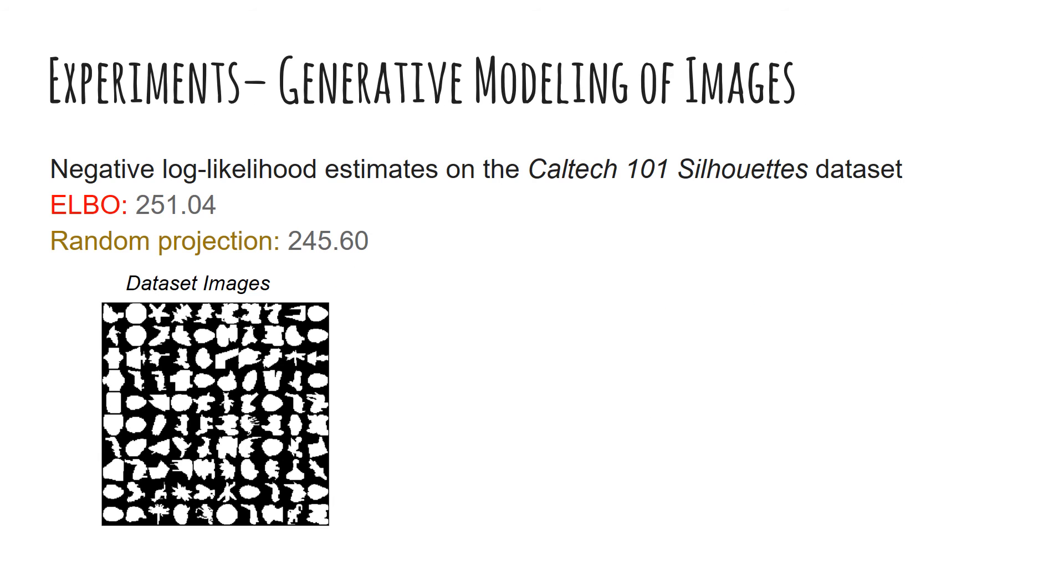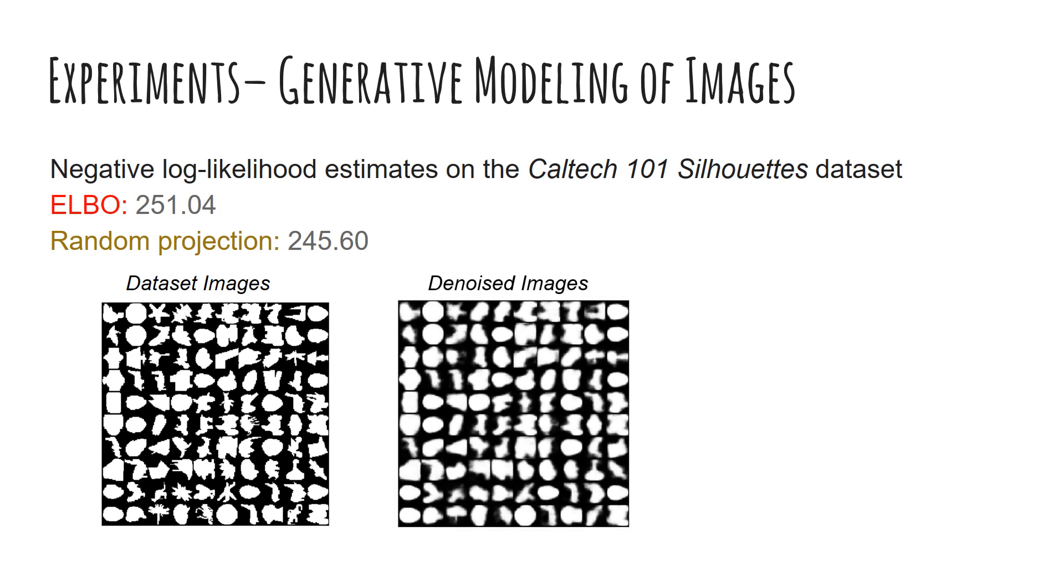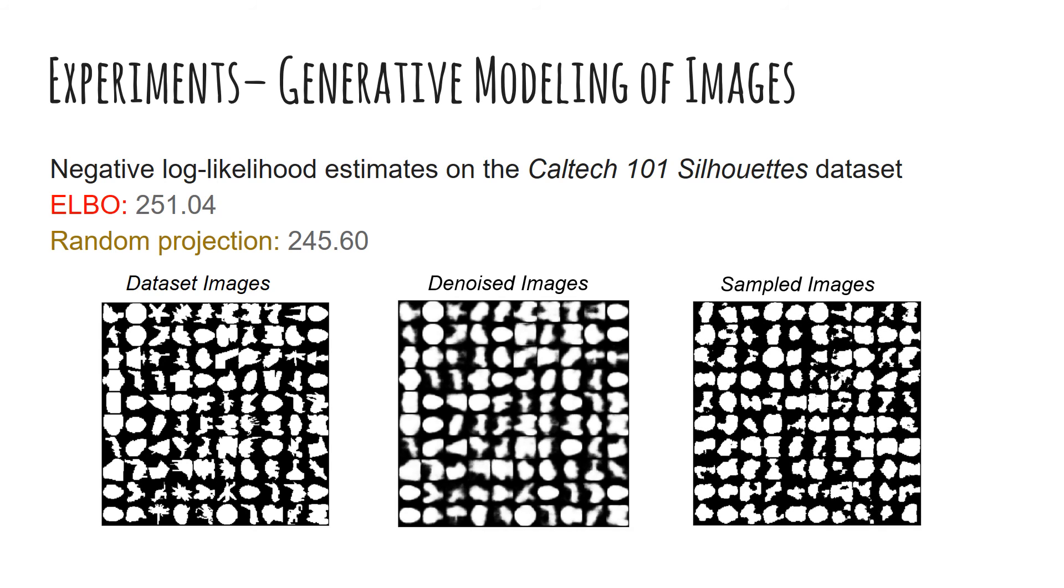We tested VB-MCS for generative modeling of images and documents using the architecture of a sigmoid belief network. For image modeling on the Caltech-101-Silhouettes dataset, the randomly projected estimates of the negative log likelihood are lower than the ELBO estimates. Even qualitatively, sigmoid belief networks trained using random projections perform well on application tasks such as denoising and sample generation.